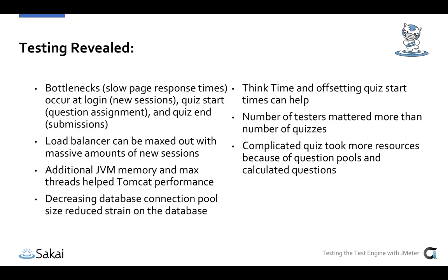We found that think time and offsetting quiz start time can help immensely. Introducing think time — anywhere from 30 seconds to two minutes between steps, which is likely less than a real student's think time — really helped by taking load off, because JMeter could randomize those intervals so requests weren't all lining up at exactly the same time. We also didn't see any noticeable difference between running multiple quizzes simultaneously versus just one quiz; the number of testers mattered more than the number of concurrent quizzes.